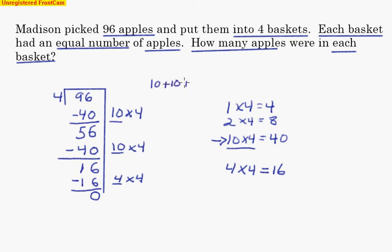And when you add that up, 10 the first time, 10 the second time, and four, you end up with 24 apples in each of the baskets. So your answer is 24 apples in each of the four baskets.